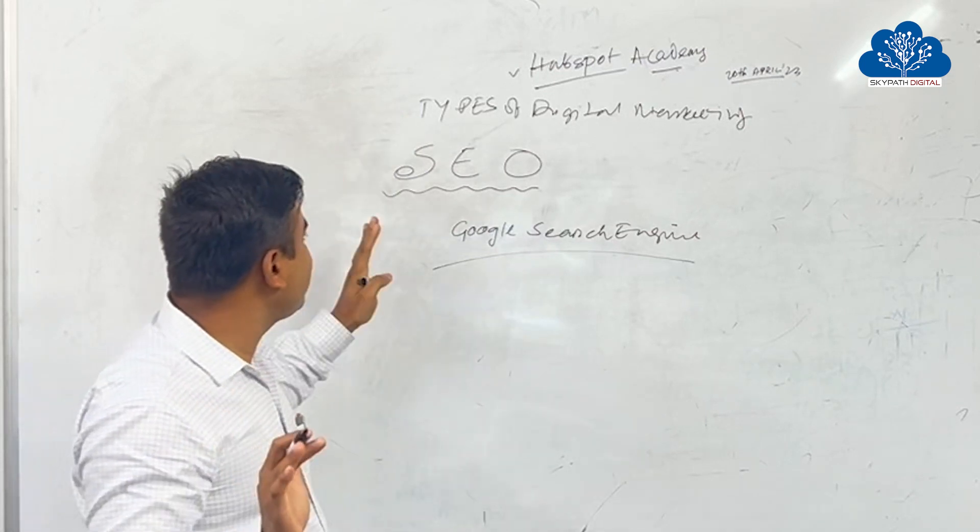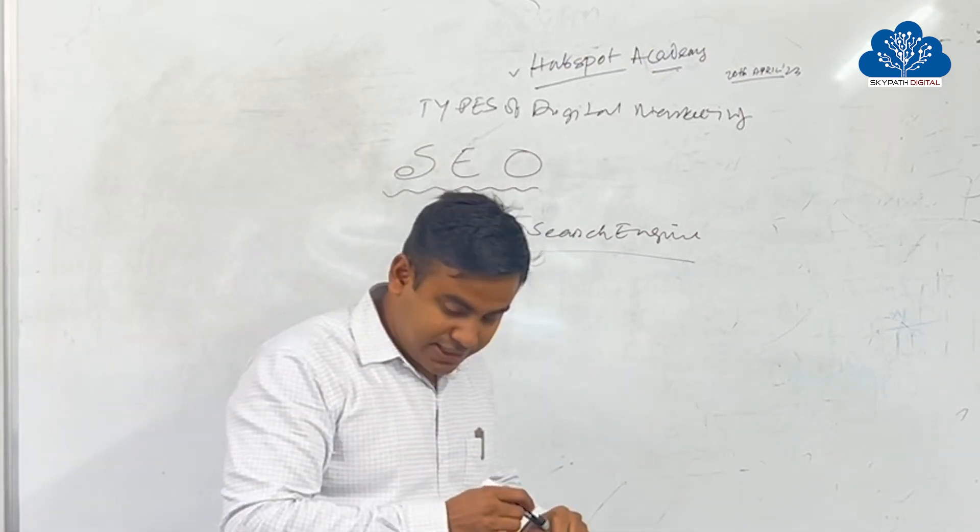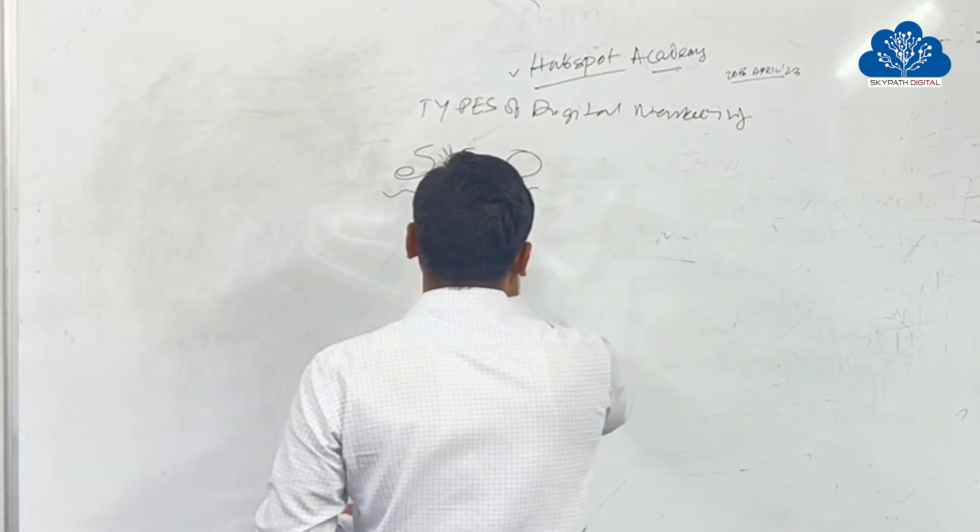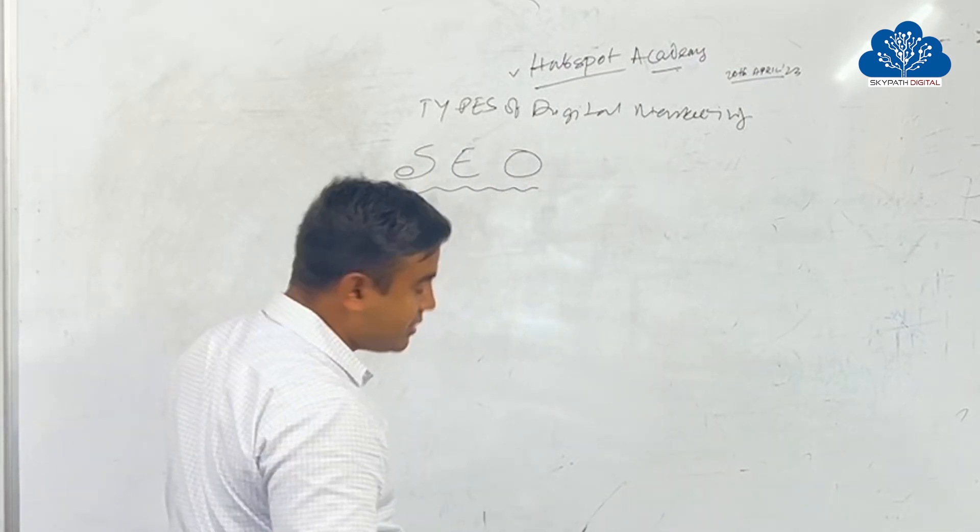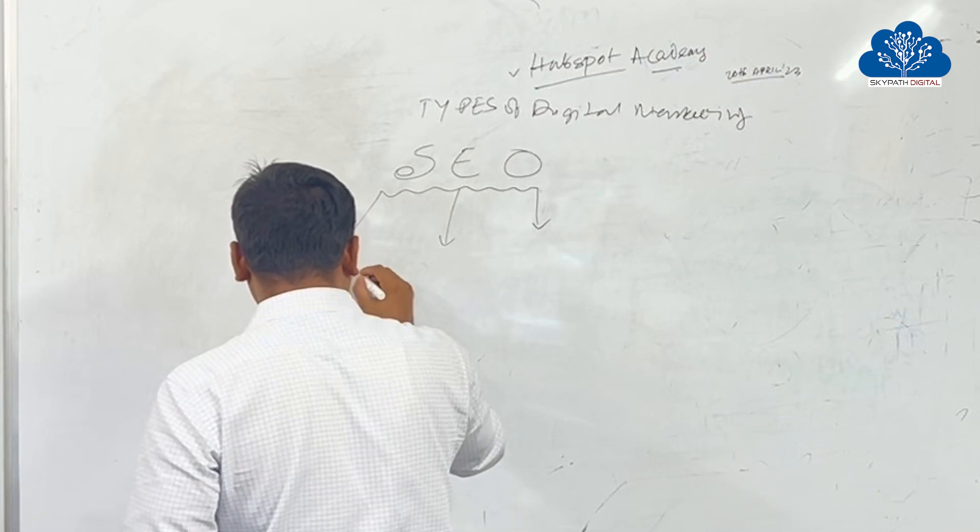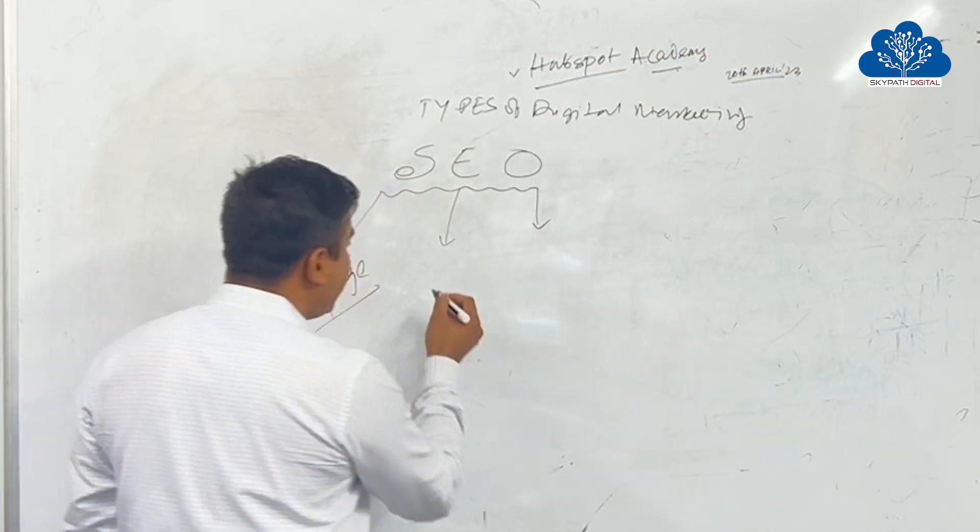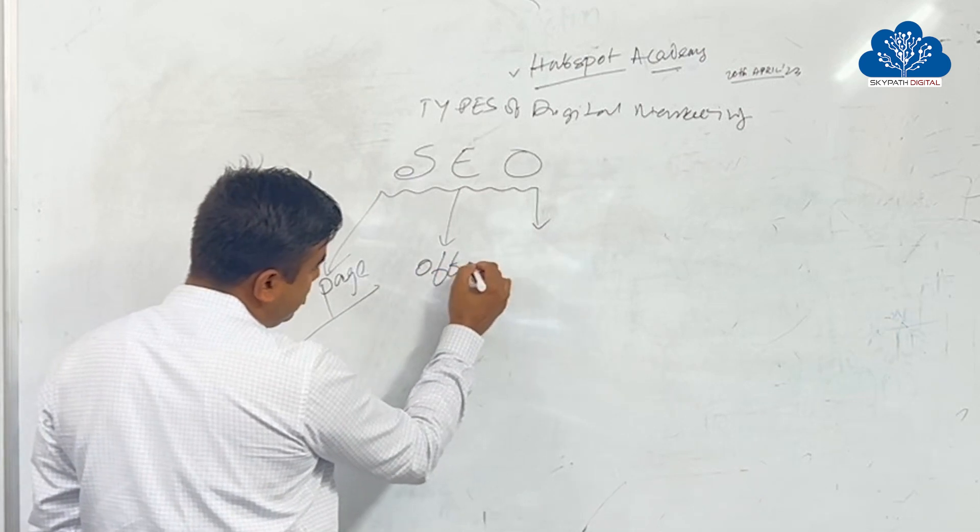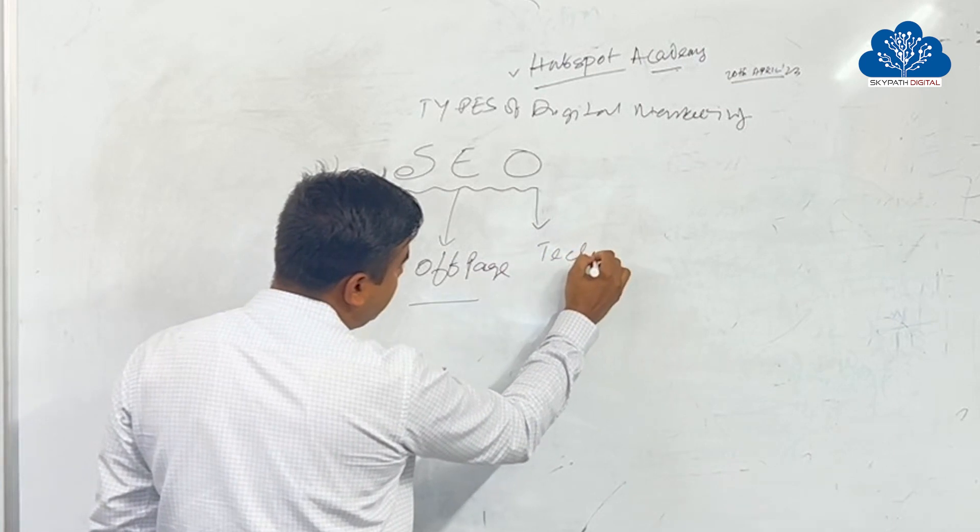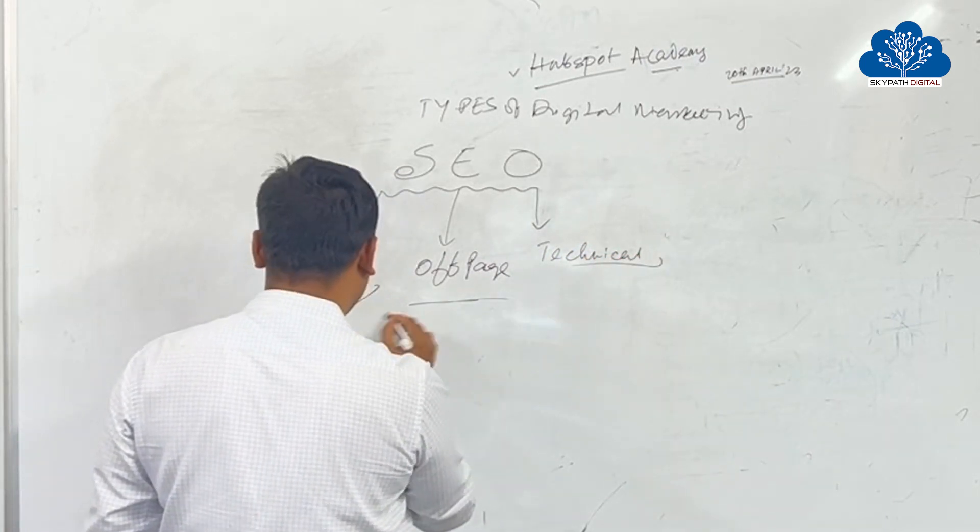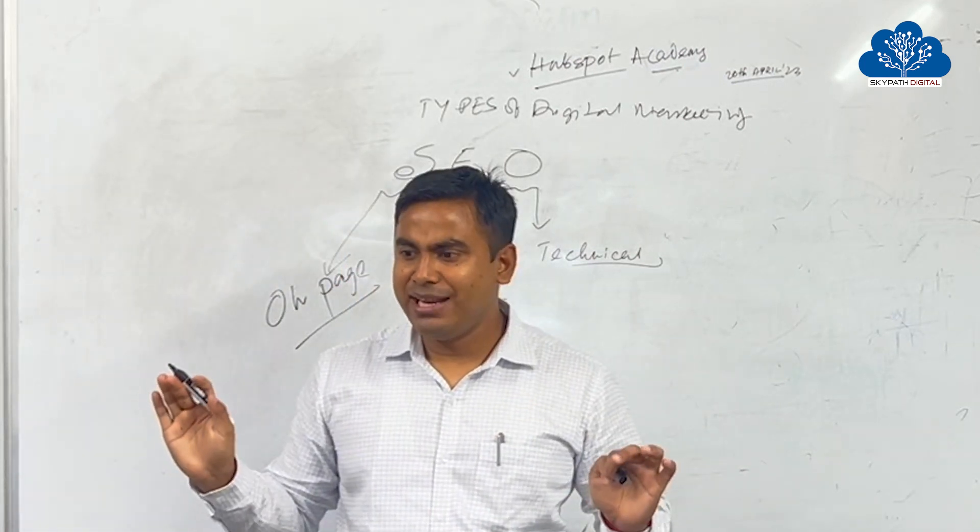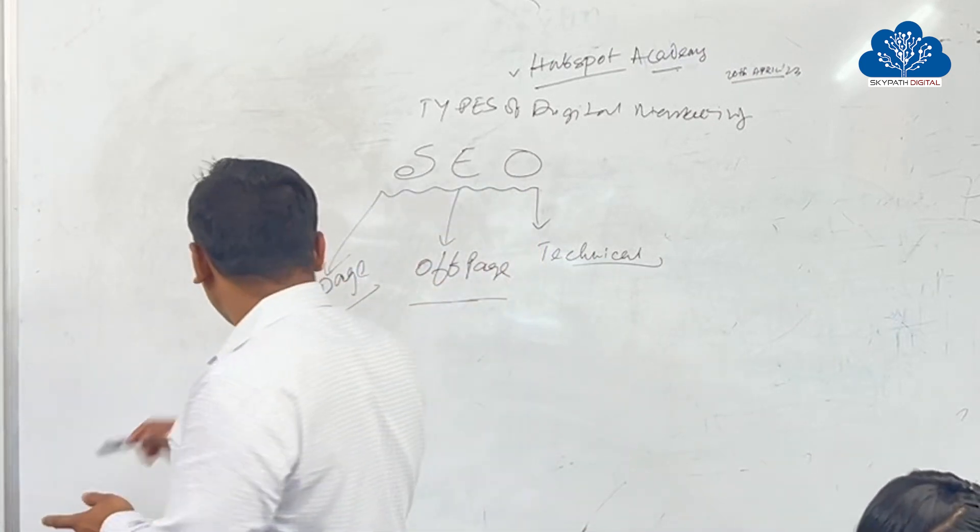So there are different types of SEO. SEO mainly three types: one is on-page, second is off-page, and third is technical. On-page SEO, off-page SEO, and technical SEO.